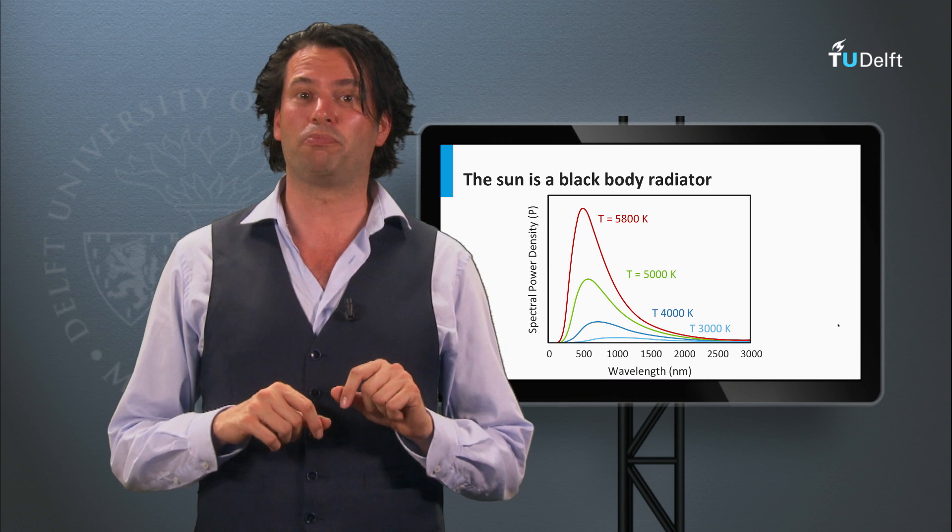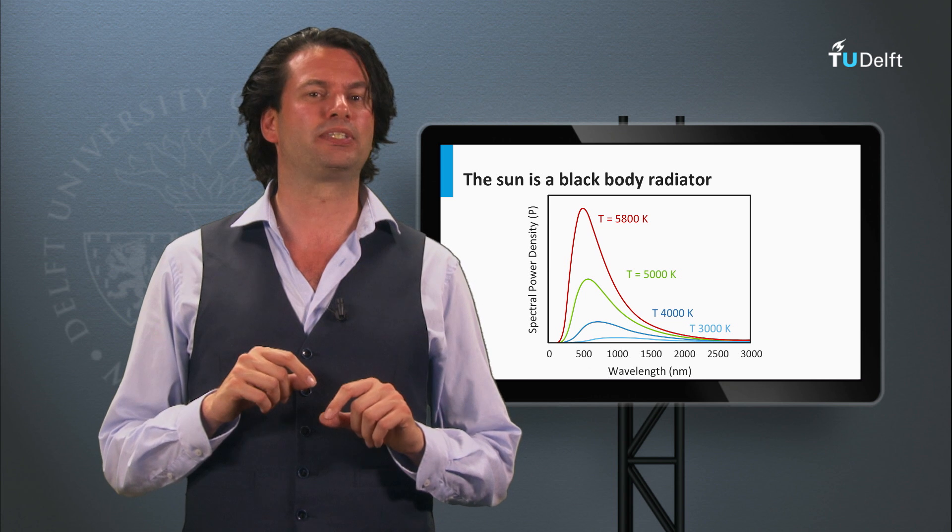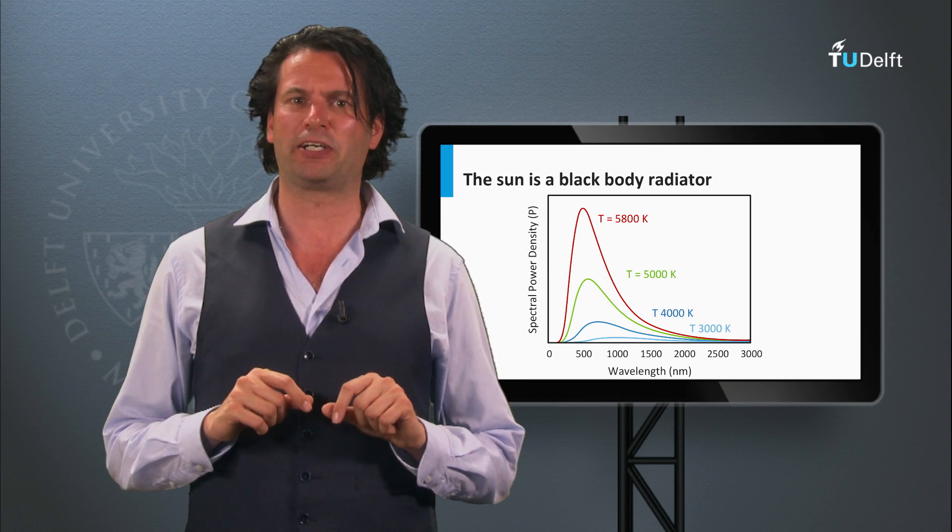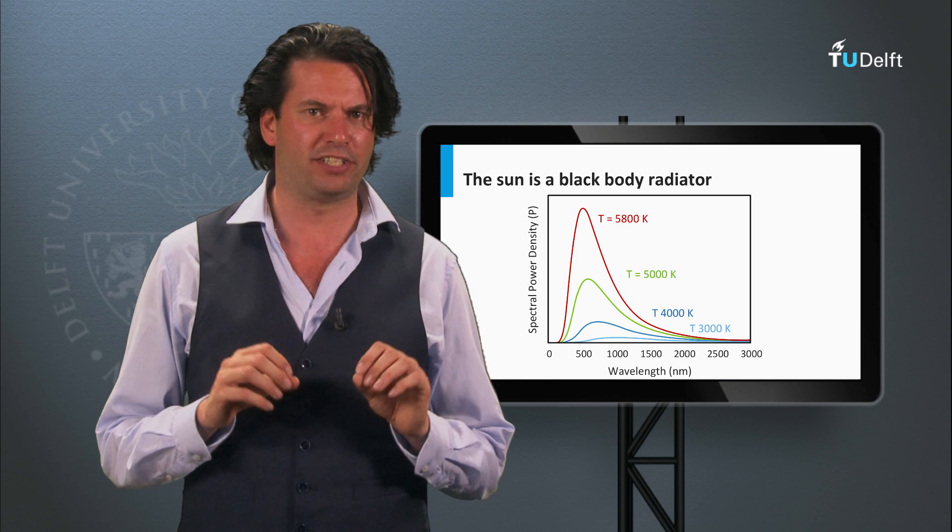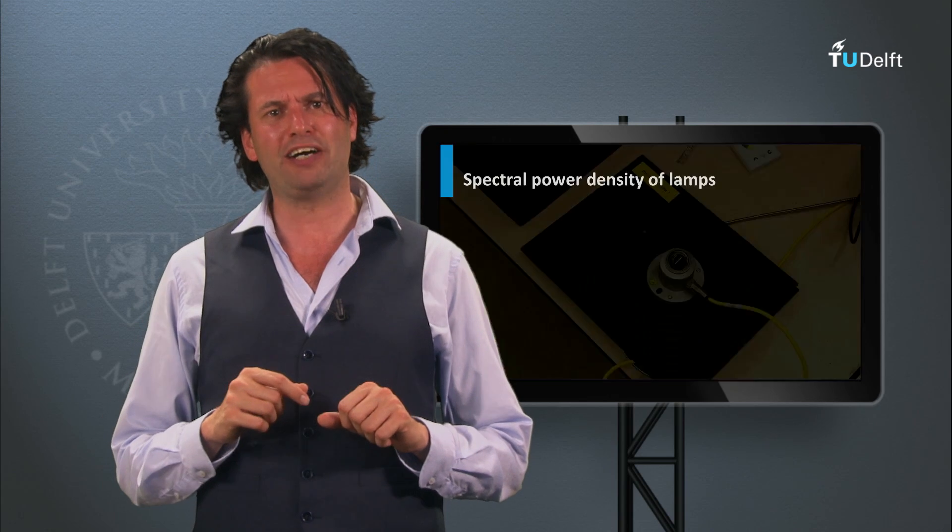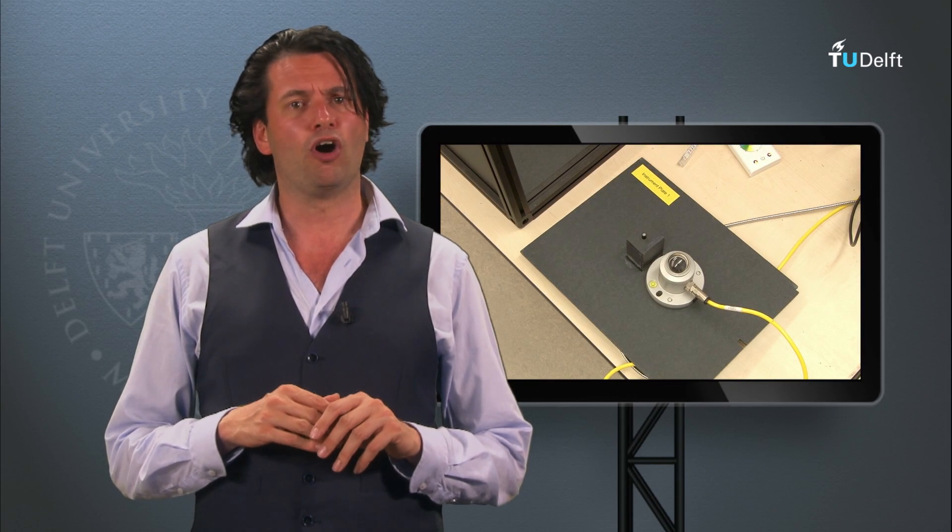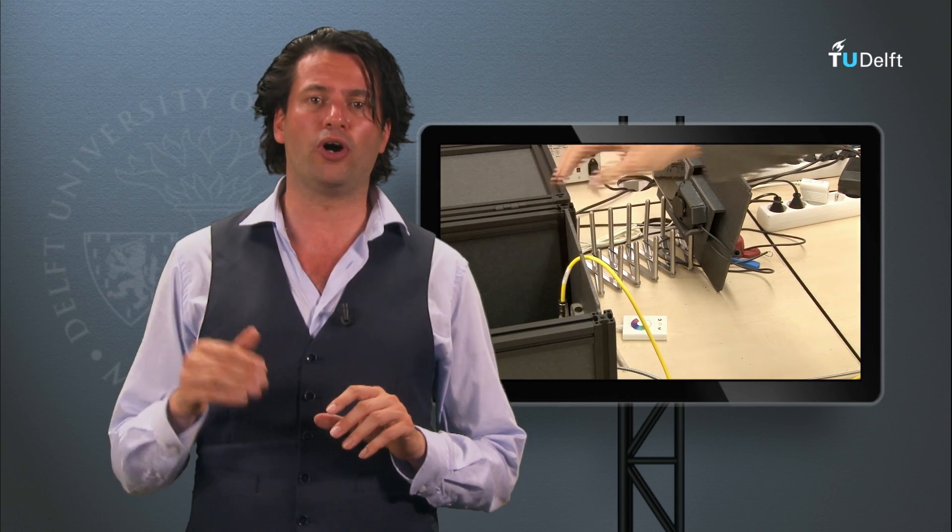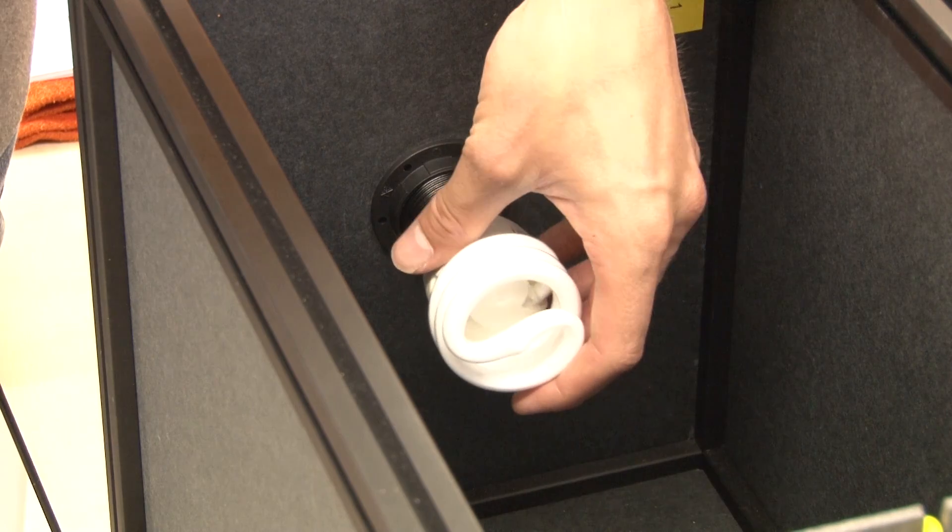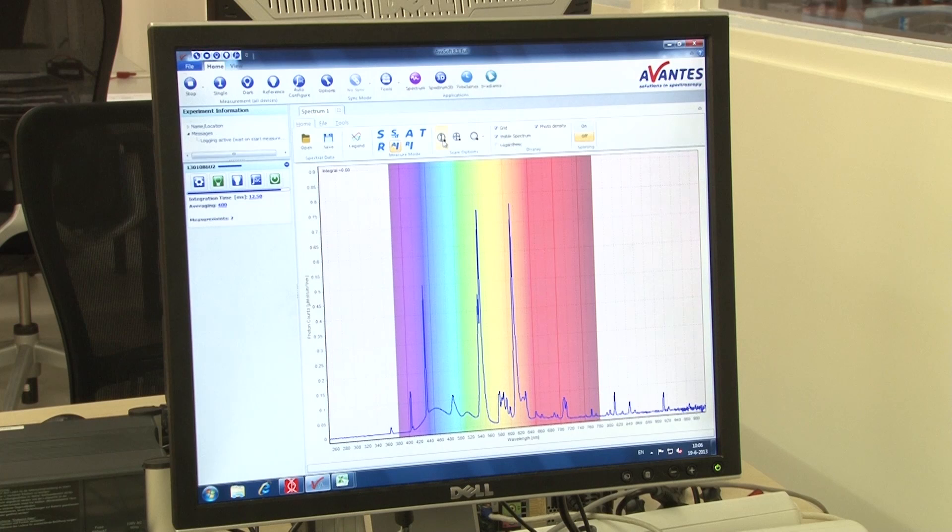To test solar modules we use so-called solar simulators. For that we use lamps which simulate the shape of the solar spectrum. This is far from straightforward, as regular lamps have different shaped spectra compared to that of the Sun. Let's go to the Delft Solar Lab and look at two spectra. One of a compact fluorescent lamp and the other of color changing LED strips. The lamps are placed in a black box and spectra shapes are measured using a spectrometer.